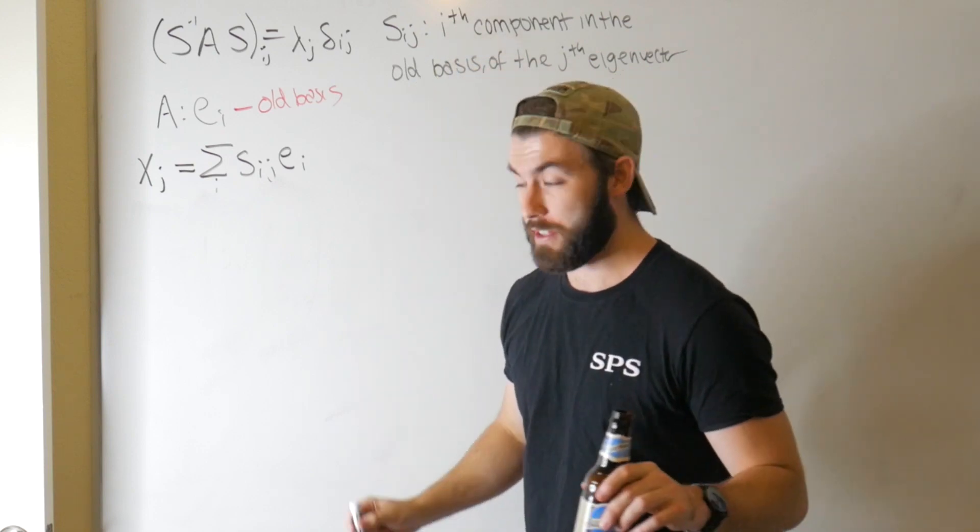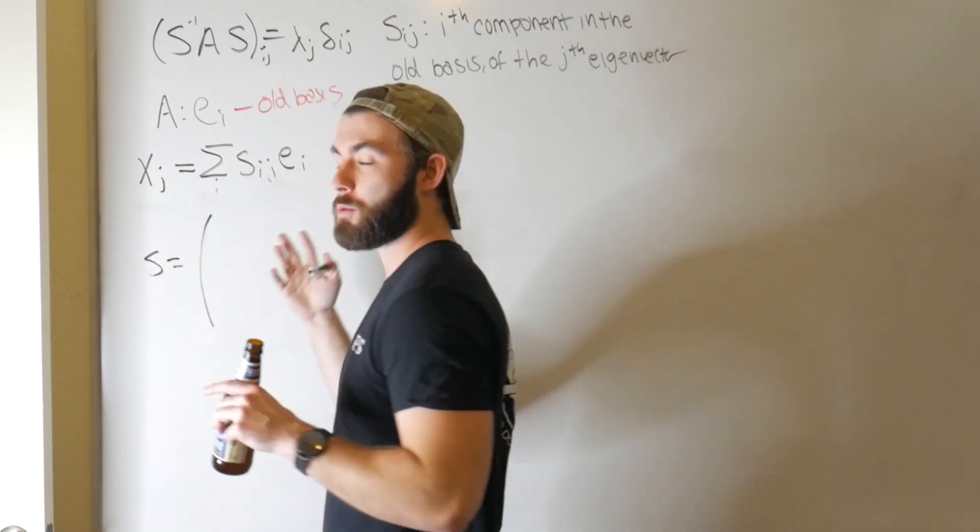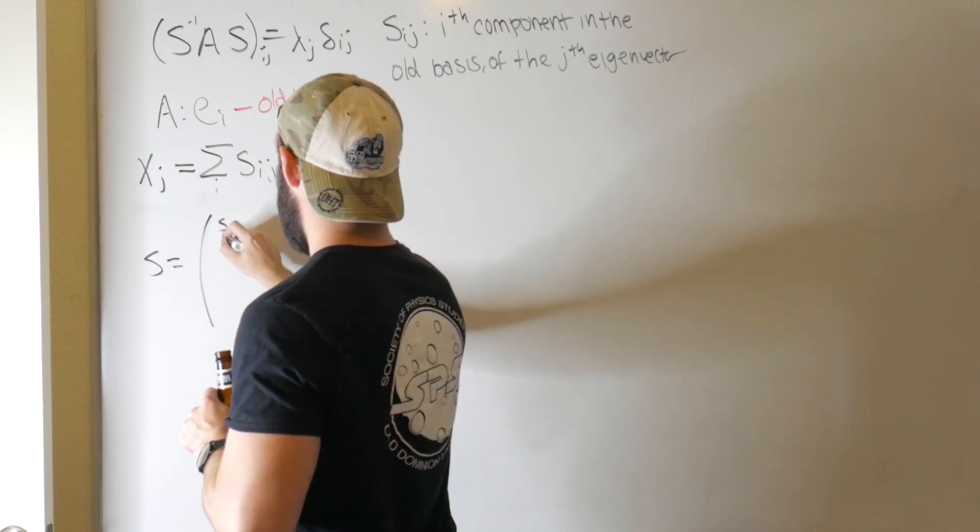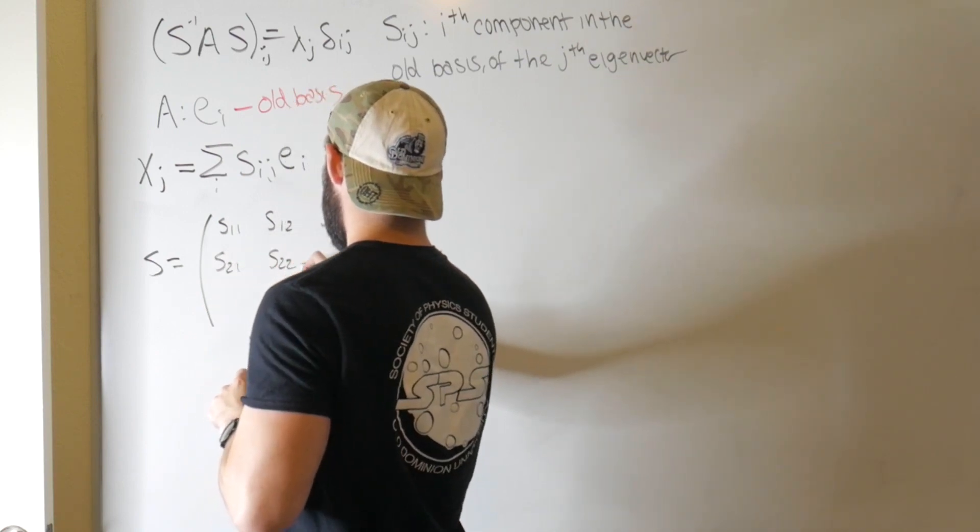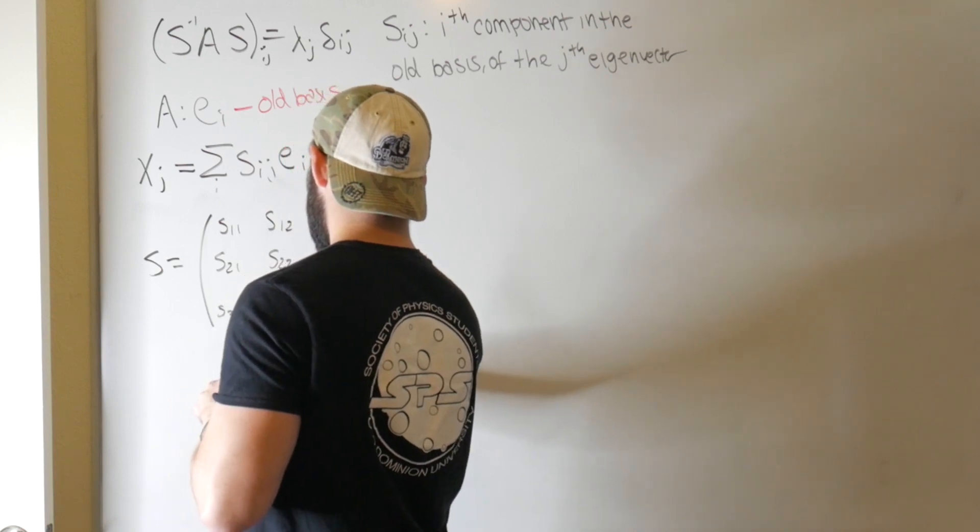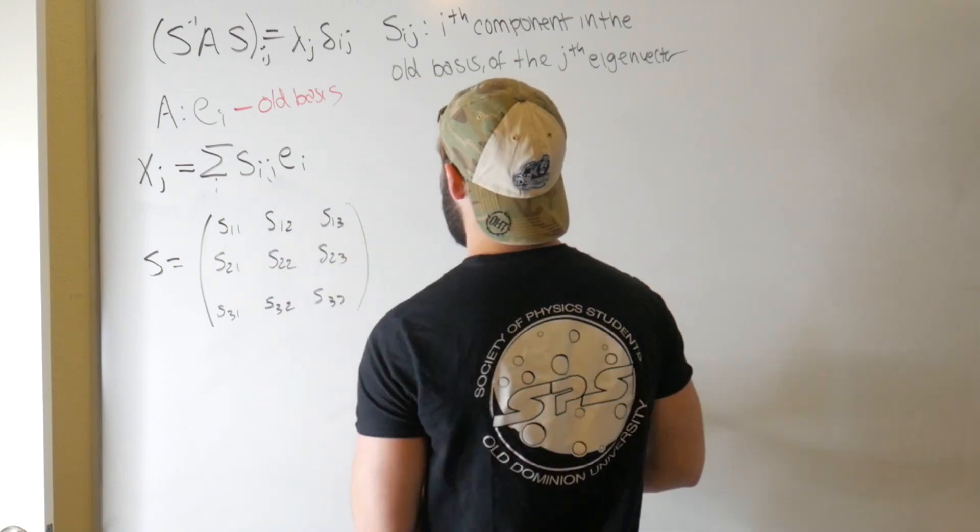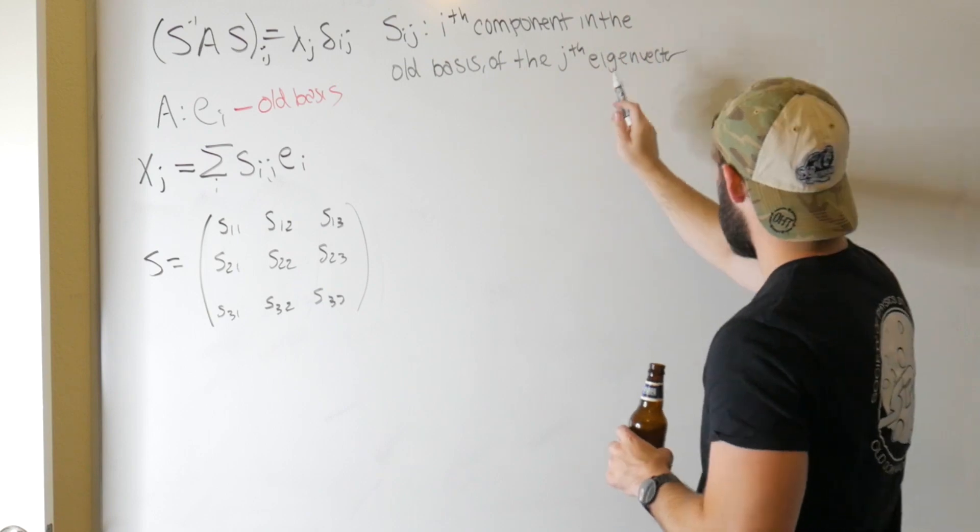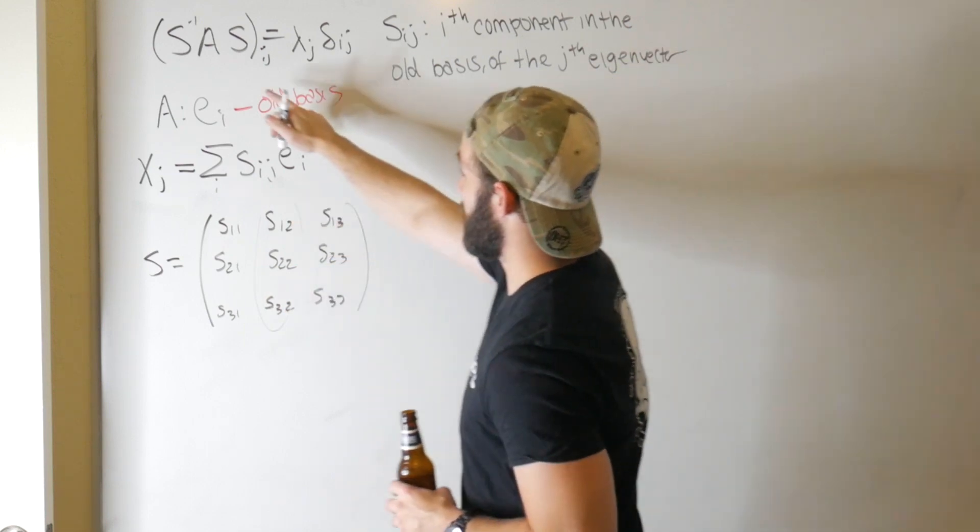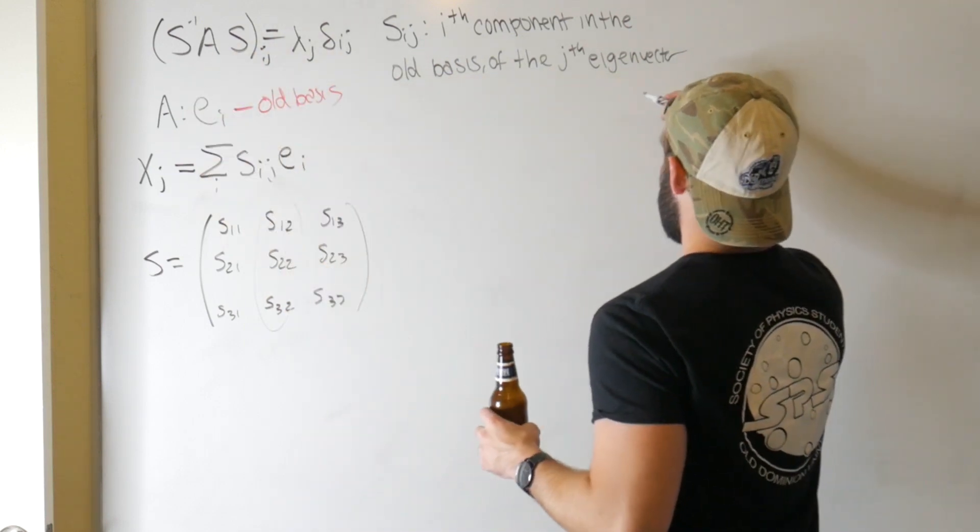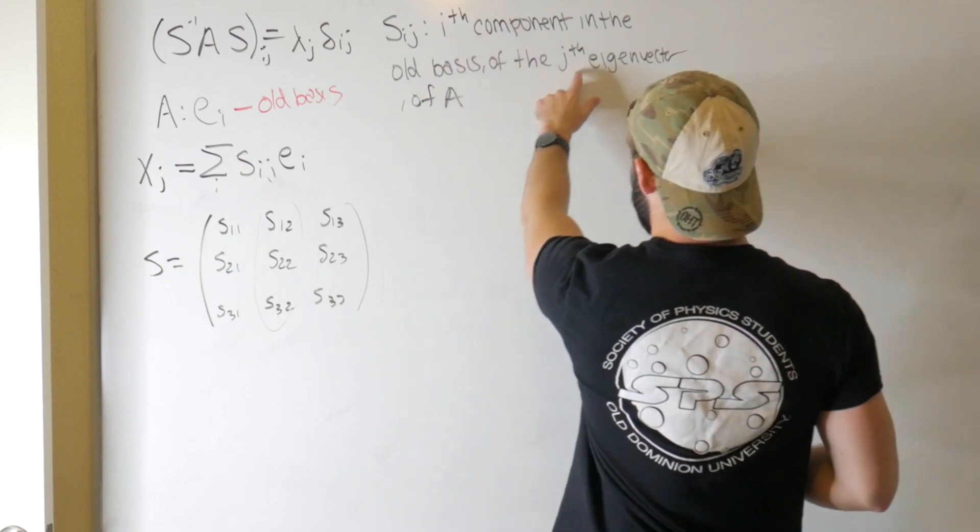Sij, that's just a matrix element, so let's go ahead and build a matrix out of it. We'll call it S. So S is equal to, let's make it a square matrix, let's do 3 by 3. So we got S11, S21, S22, S23, S31, S32, S33. So these are our Sij. So what this says is the i-th component in the old basis of the jth eigenvector. J corresponds to columns, so what that's telling us is that each column here is an eigenvector of A. Okay, that's probably important. I should have written that of A. Okay, sorry about that.